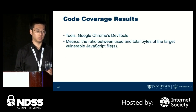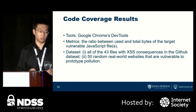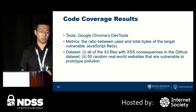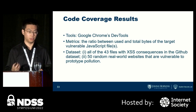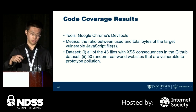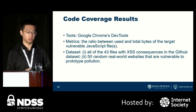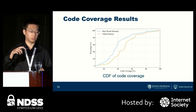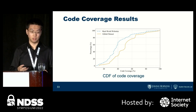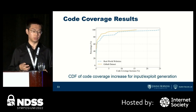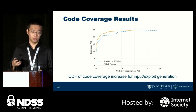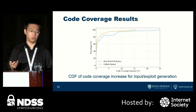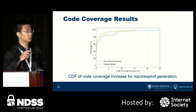The next aspect is code coverage results. The tool used is Google Chrome DevTools; the metric is the ratio between used and total bytes of the target vulnerable JavaScript. The dataset is 43 files with cross-site scripting consequences and 50 randomly chosen real-world websites vulnerable to prototype pollution. We provide a CDF of code coverage with two curves — one for real-world websites and one for the GitHub dataset — and also a CDF of code coverage increase for the input exploit generation.